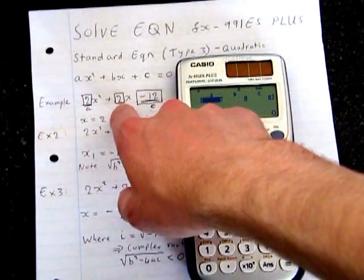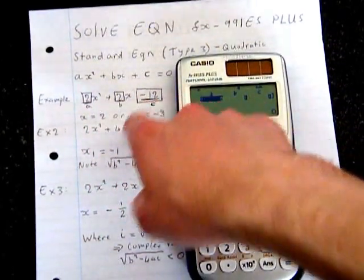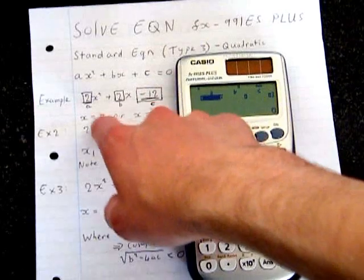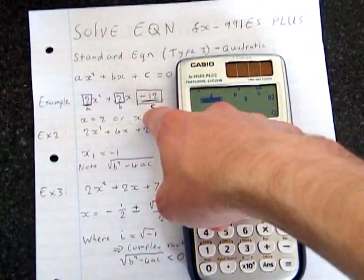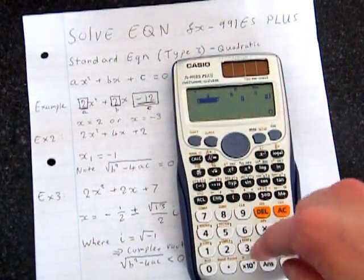So in this example, we'll put 2x squared plus 2x minus 12. Compare with this equation, so we get that a is 2, b will be 2, and c is minus 12.